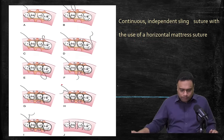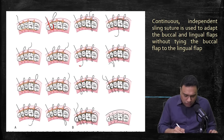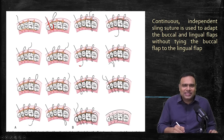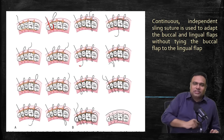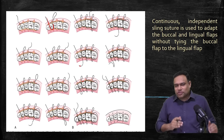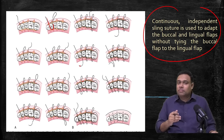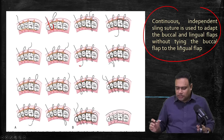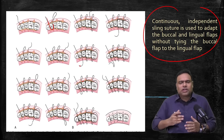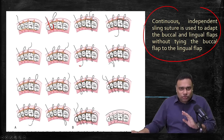In the next diagram, the needle is inserted from the buccal aspect, goes all around the tooth, takes a bite from the buccal again, and moves out — continuously doing sling, sling, sling. There is no mattress here. Once the buccal aspect is finished, he comes around and gives the sling from the lingual aspect as well. This is the continuous independent sling suture without the mattress — used to adapt buccal and lingual flaps independently, without tying buccal to lingual. It goes all around the tooth — that's why it's called a sling suture.